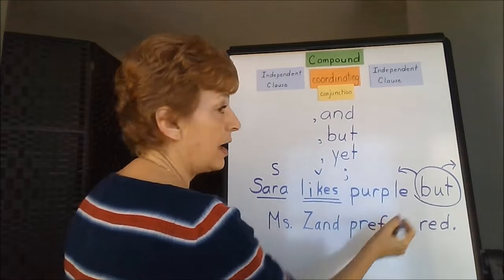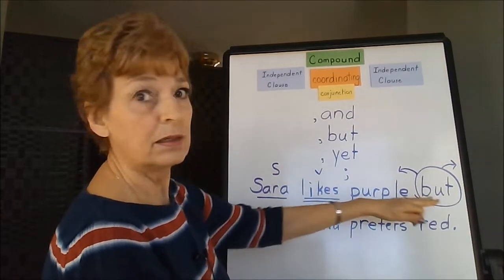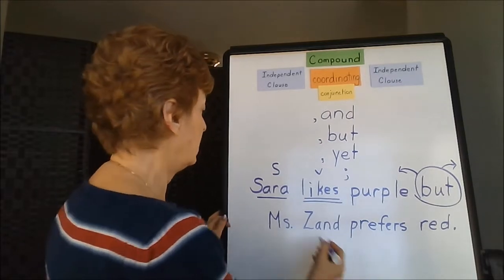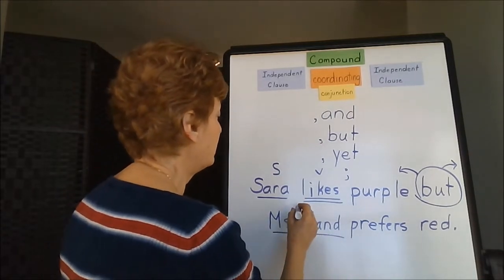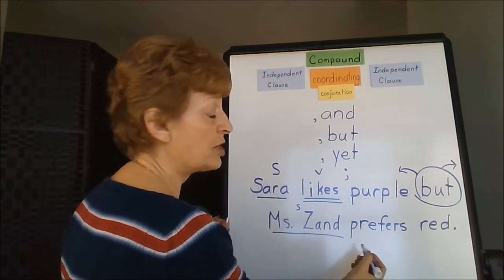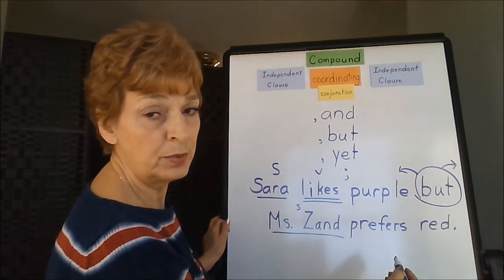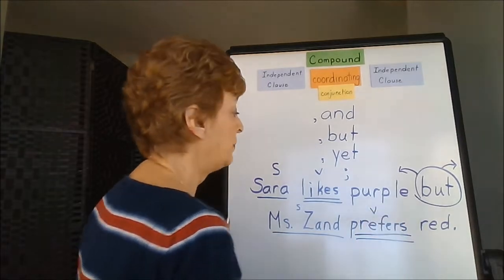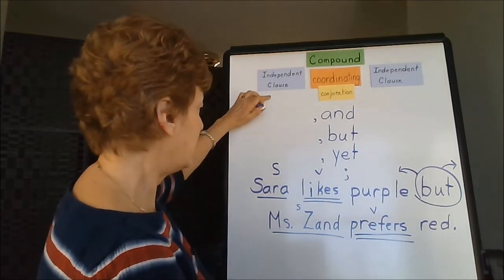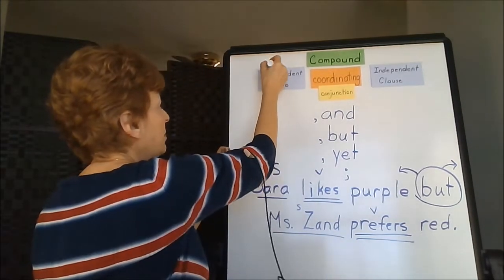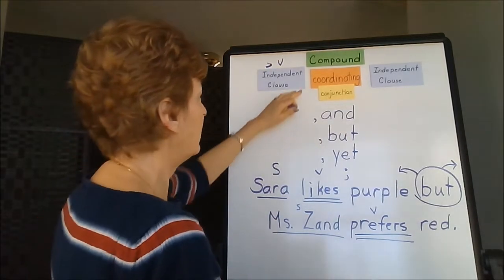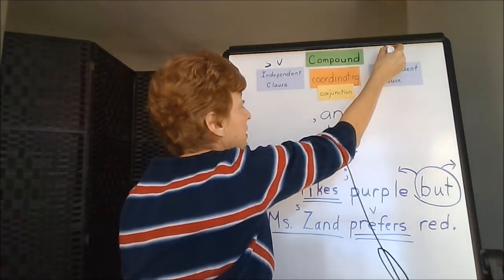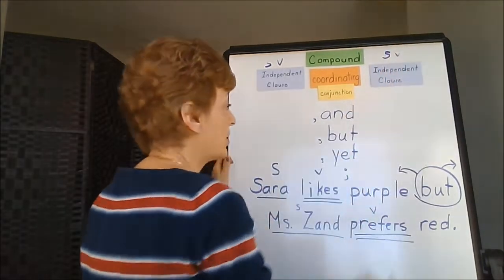And on the other side of the coordinating conjunction, we have 'Miss Zand prefers red.' Miss Zand is a person functioning as a subject because Miss Zand is the one who prefers — that's a verb. We've got our independent clause, subject and verb in front of the conjunction, and a subject and verb behind the conjunction.